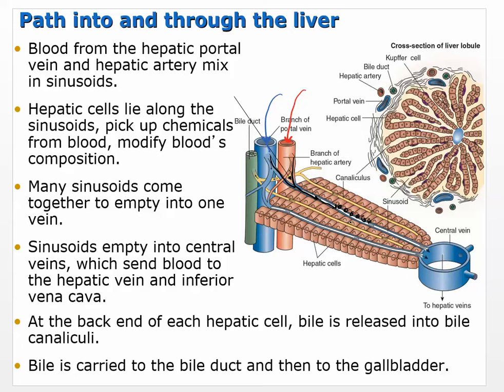Many sinusoids come together to empty into one vein, which then goes off to the heart and into general circulation. You can think of this as a conveyor line — there are lots of them all over the liver where things are getting broken down, things are being excreted, things that need to be in the blood and things you don't want in the blood are all going through this vetting process — cleaning the blood, in a simple way to put it. Sinusoids empty into the central vein, which sends blood to the hepatic vein and inferior vena cava.